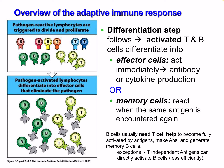Activated T and B cells differentiate into effector cells which act immediately — producing antibodies for B cells and cytokines for T cells — or into memory cells which react when the same antigens are encountered again. B cells usually need T cell help to become fully activated. We have T cell-independent and T cell-dependent B cell reactions, which we'll talk about later. T-independent antigens can directly activate B cells but are less efficient.